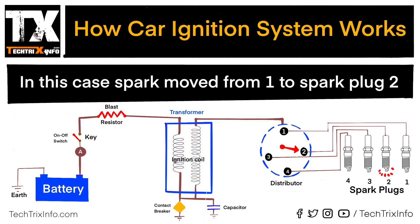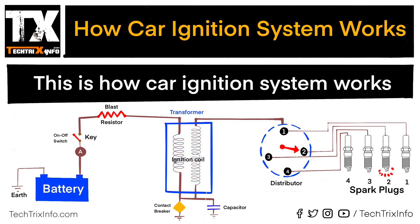In this case, the spark moved from spark plug number one to spark plug number two as the distributor changed the direction. This is how a car ignition system works.